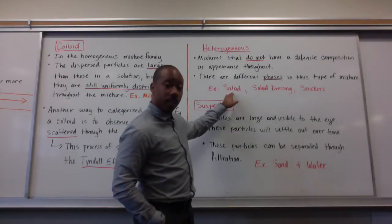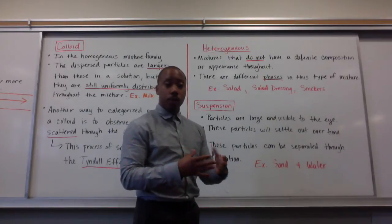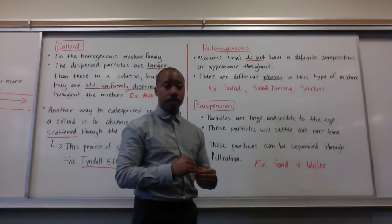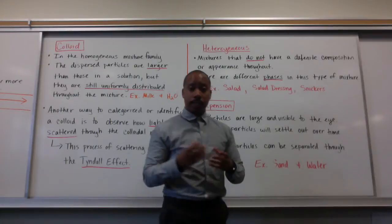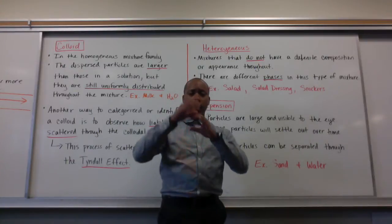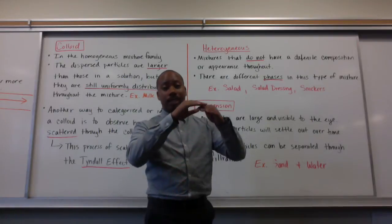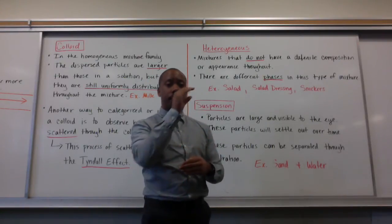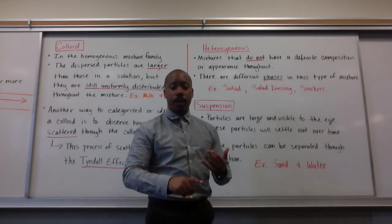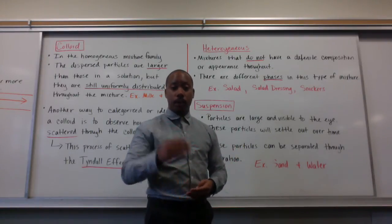An example of a heterogeneous mixture would be a salad — you can have lettuce, tomatoes, croutons, cheese, bacon bits. Whatever you have in your salad, you can see the different parts; it's not uniform. Another example is salad dressing — for Italian dressing, you can see there's a layer on top and a layer on the bottom; you have to shake it up to mix it together, and then eventually it settles out again. And a Snickers bar — you have your chocolate phase, peanuts, caramel phase, and whatever else is inside. You can clearly see the different parts of that Snickers.